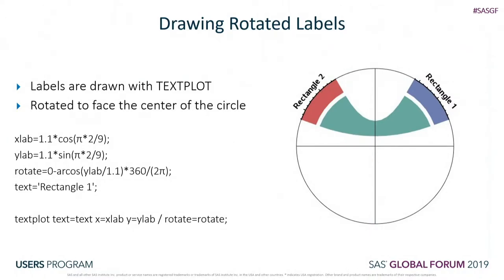For drawing rotated labels, I use the text plot statement. I rotate them to face the center of the circle, which requires arc cosine to get the inverse of the current angle in order to get the rotation angle for the text. The text variable is whatever we want—our group name or variable name. In the text plot: text=text, x=x_lab, y=y_lab, rotate=rotate. The x and y coordinates are placed at the midpoint of each group, so I calculate halfway between each group's start and end to get those coordinates.